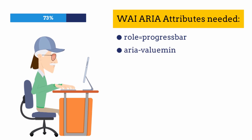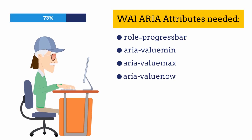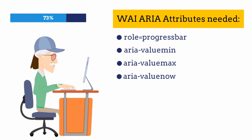Normally it starts from zero. aria-valuemax is the maximum value that the progress bar can have. Finally, we have aria-valuenow, which indicates the current value. This value should be updated dynamically to indicate the progress to assistive technologies. We can update the aria-valuenow attribute using JavaScript. We can omit the current value if the progress cannot be determined.